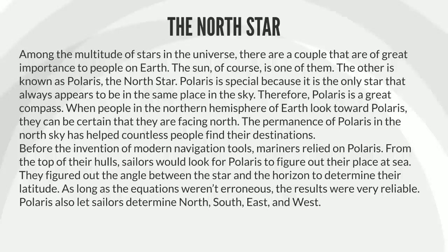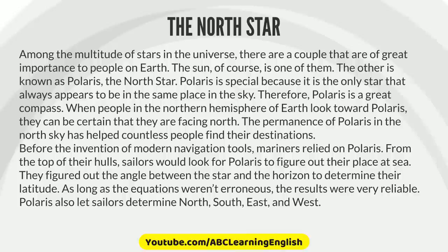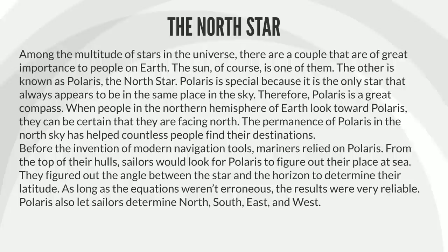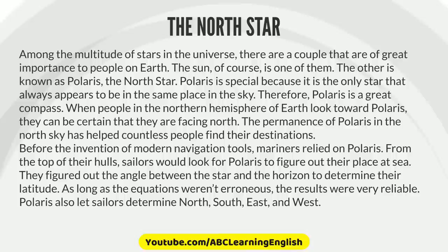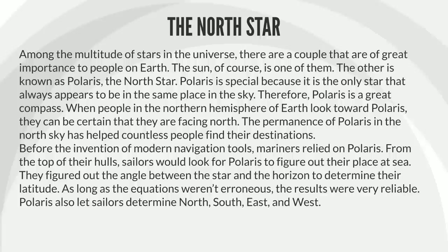When people in the northern hemisphere of Earth look toward Polaris, they can be certain that they are facing north. The permanence of Polaris in the north sky has helped countless people find their destinations. Before the invention of modern navigation tools, mariners relied on Polaris. From the top of their hulls, sailors would look for Polaris to figure out their place at sea. They figured out the angle between the star and the horizon to determine their latitude. As long as the equations weren't erroneous, the results were very reliable.